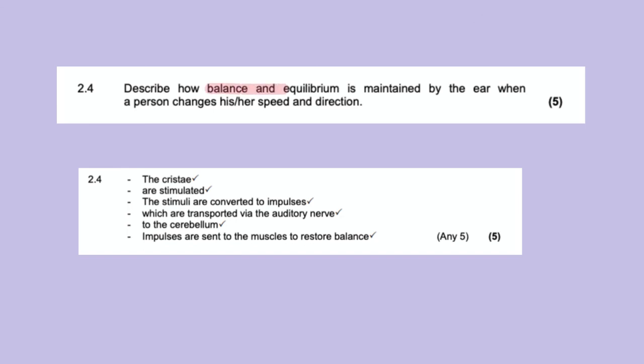Describe how balance and equilibrium is maintained by the ear when a person changes his or her speed and direction. So already I'm thinking speed and direction, that's dynamic balance. So I know it's changed in speed and direction. So this is me sidestepping someone. So it is dynamic balance, which means the receptor, I remember CD, is the cristae, which I found at the ampoule, at the base of the semicircular canals.